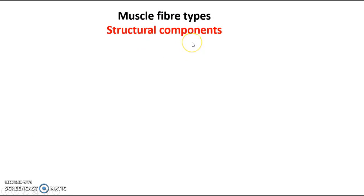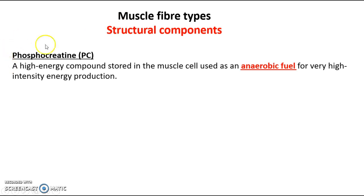Within a muscle fibre there are certain structural components, and the amount of each will dictate which fibre type is predominant and which activities you're best at. The first structural component is phosphocreatine — a high energy compound stored in the muscle cell used as an anaerobic fuel for high intensity energy production. We can break phosphocreatine down without oxygen, giving us energy for really high intensity activities such as shot put, 100m sprint, a sprint start, or a rugby tackle.